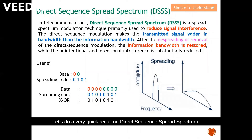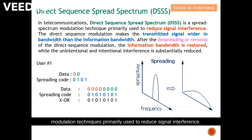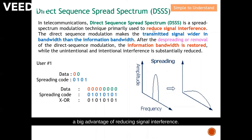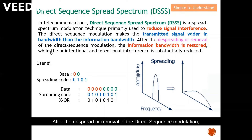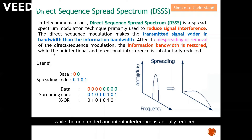Let's do a very quick recall on direct sequence spread spectrum. In digital communication, DSSS is a spread spectrum modulation technique primarily used to reduce signal interference — that is a big advantage of direct sequence spread spectrum. The direct sequence modulation makes the transmitted signal wider in bandwidth than the information bandwidth. After the spreading or removal of the direct sequence modulation, the information bandwidth is restored while unintended interference is reduced.